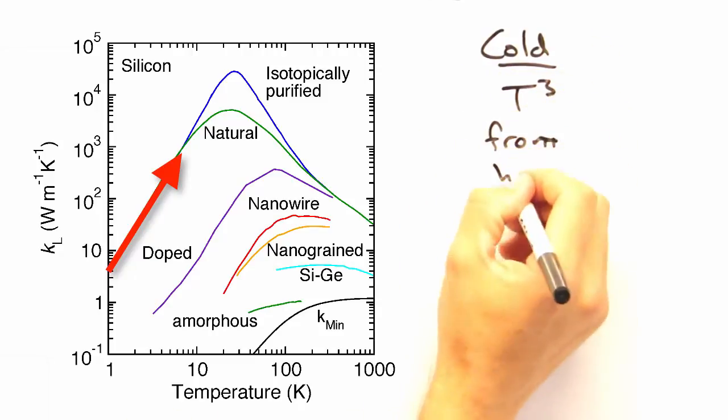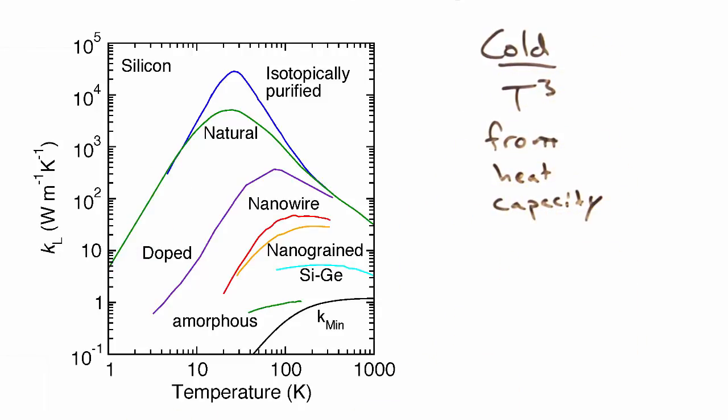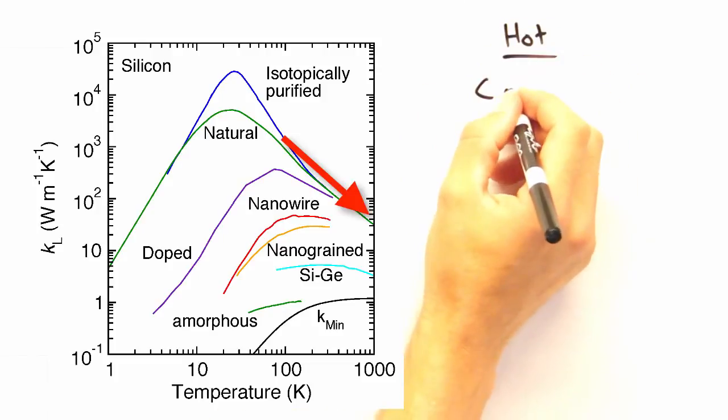Well, on the left, there's a T-cubed dependence, and that comes from our heat capacity, because our mean free path is a constant at low temperature. Good.